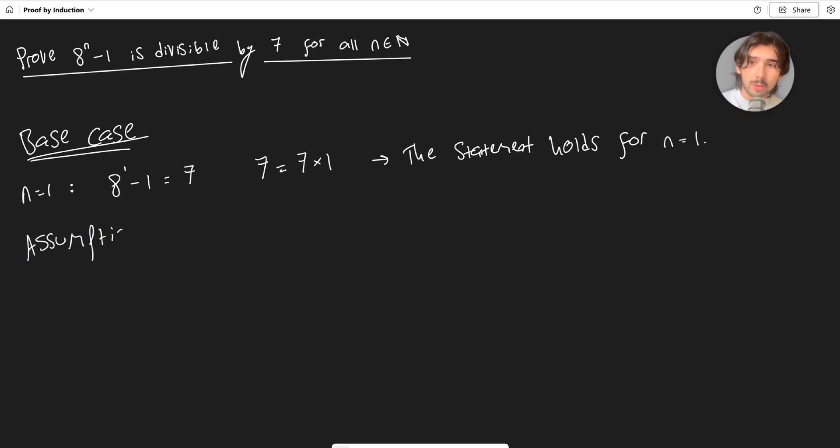Moving on to the next step, this is our assumption. We're going to assume that the statement holds for an arbitrary natural number k. So we shall assume that there is some k such that 8 to the k minus 1 is divisible by 7. That means we can say that 8 to the k minus 1 is equal to 7 times some number, I'll call it p, where p is a natural number. That's our assumption.